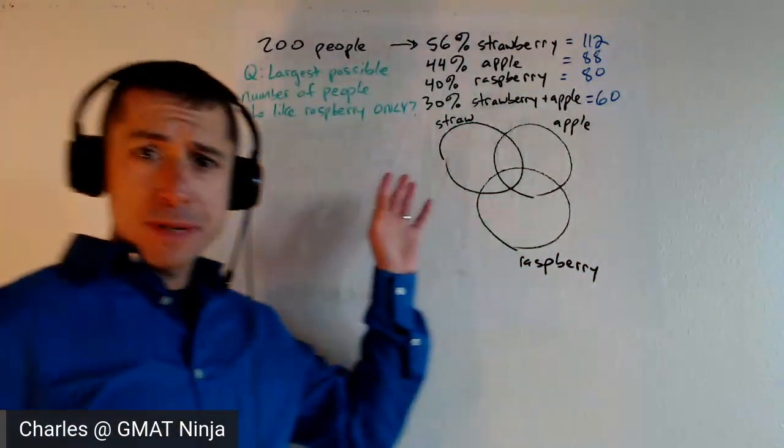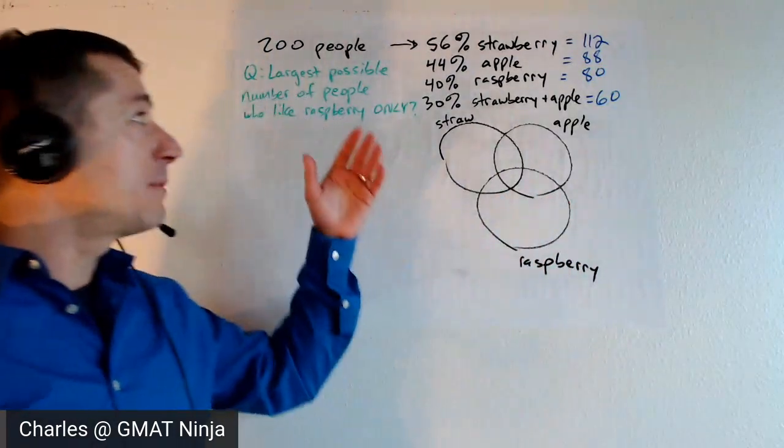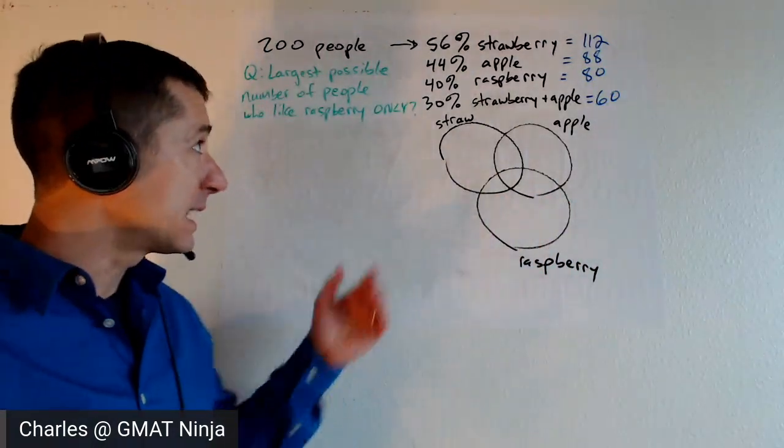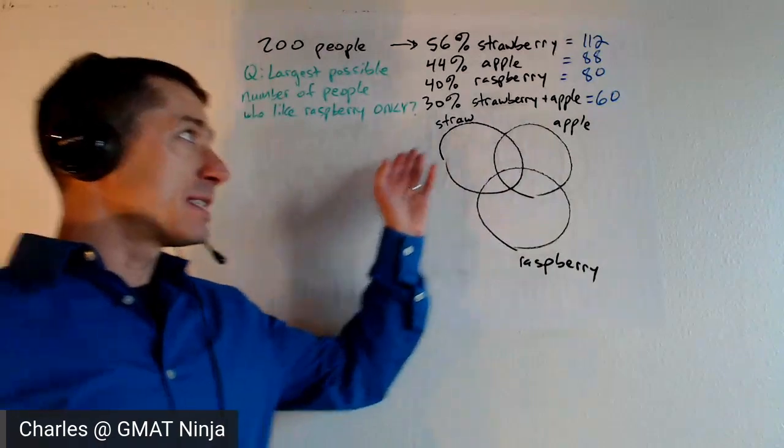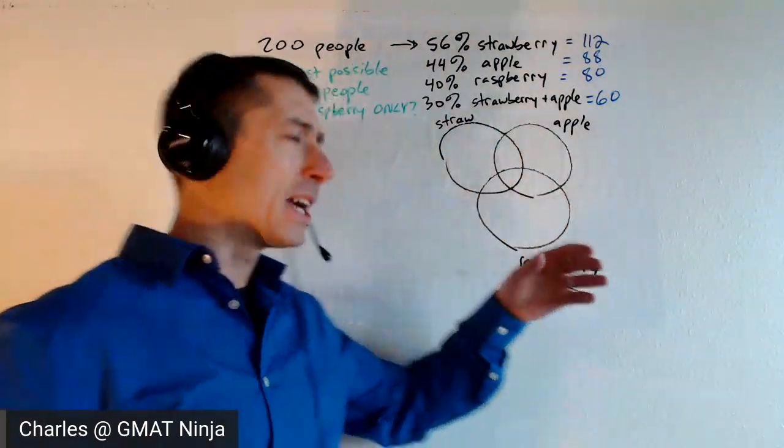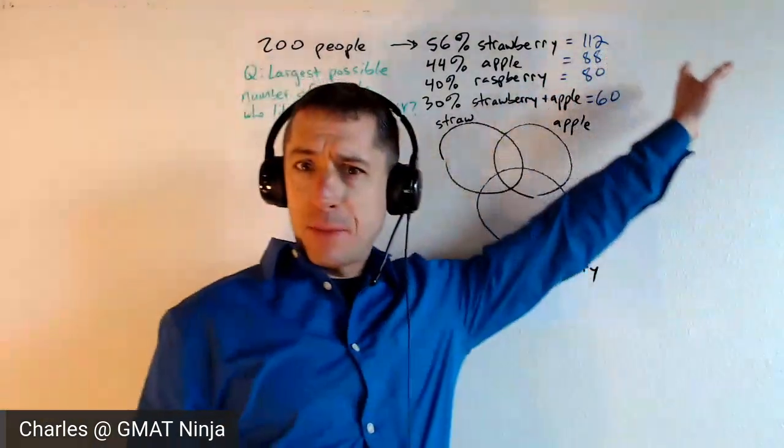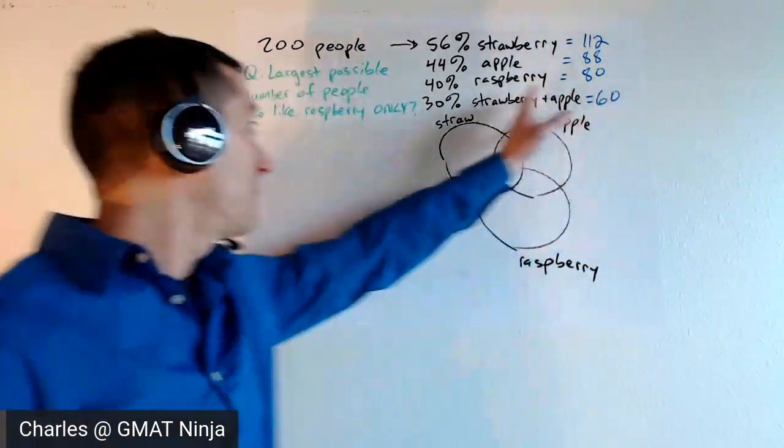So basically the question, once again, we have 200 people, 56% like strawberry jam, 44% like apple jam, 40% like raspberry jam, 30% like strawberry and apple, a whole lot of information here. I'm going to turn that into the number of people since that's the unit that the question is asking us about.